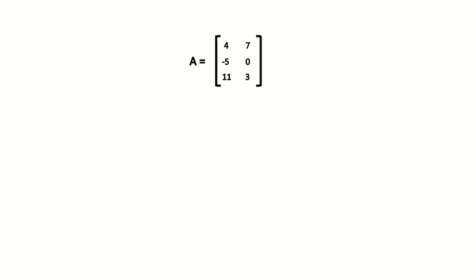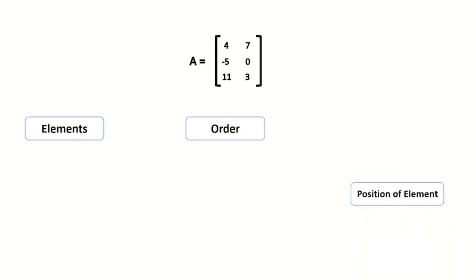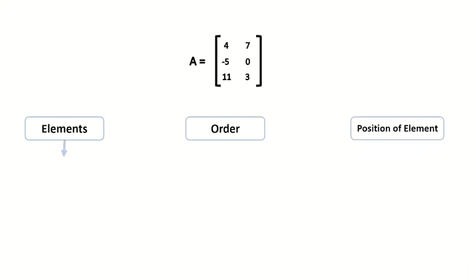There are 3 things we need to know about every matrix. First is element, second is order, third is position of element. Element is a component of the matrix. Matrix A has 6 elements: 4, 7, minus 5, 0, 11, and 3. The elements of a matrix don't have to be numbers — they could also be letters or symbols.